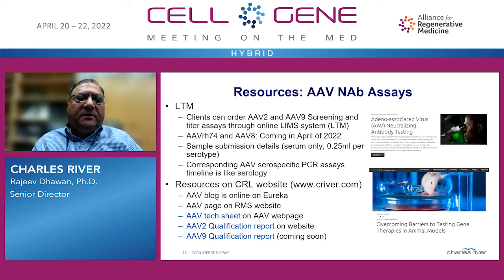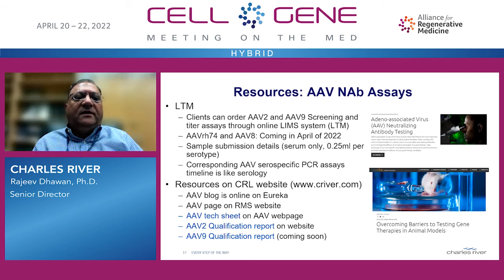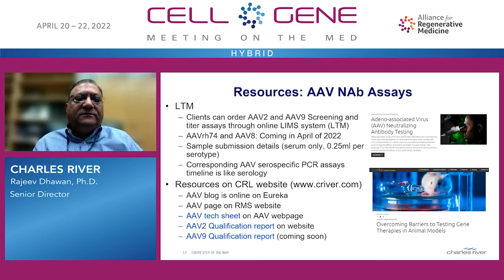Multiple resources are available related to these AAV neutralizing antibody assays. You can visit our website, seariver.com, and through our LIMS system, LTM, you can order the screening and titer assays. Currently, AAV2 and AAV9 assays are available. Next month in April, AAVRH74 and AAV8 assays will be coming. Sample submission details are also listed — you can submit serum only, 0.25 mL per serotype. The corresponding PCR assays are also available for all serotypes. There is also a blog and a full page with a technical sheet, qualification reports, and additional data on the website.